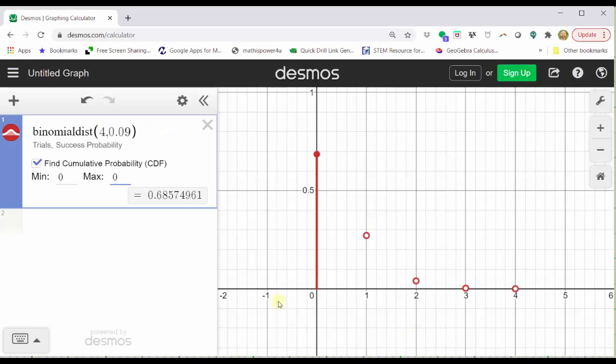We can click on the point where X equals two, and the second value is the probability we're looking for, which is approximately 0.0402, or we can change the min and max values in cell one to two.